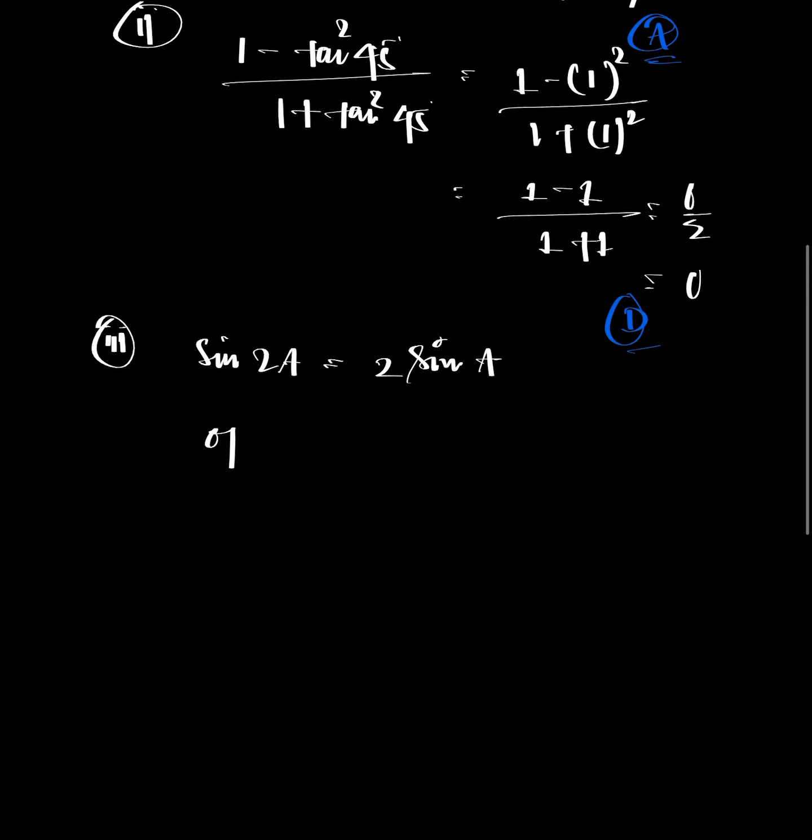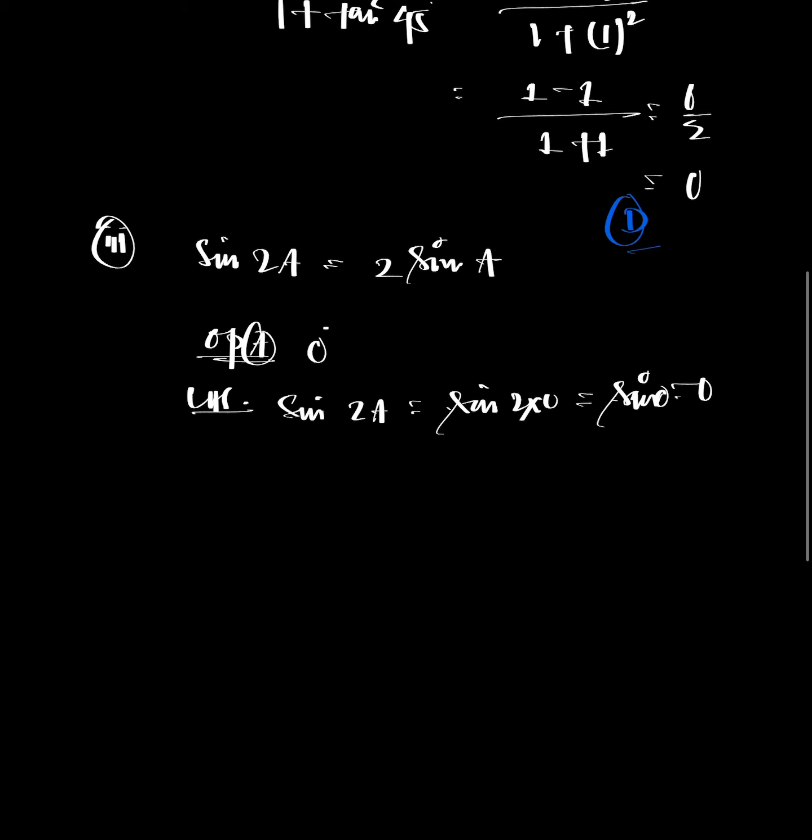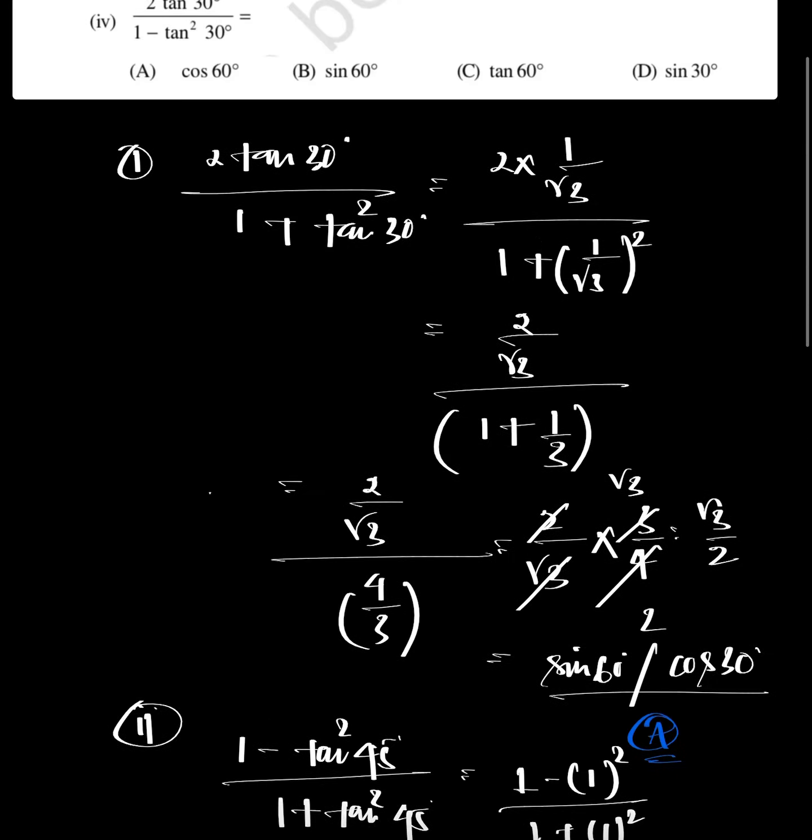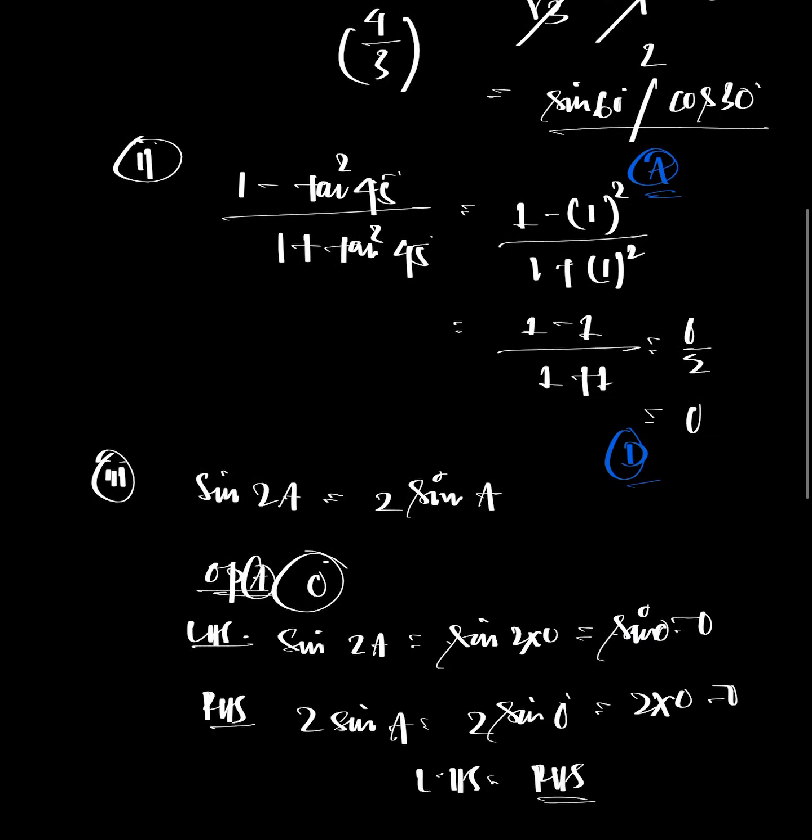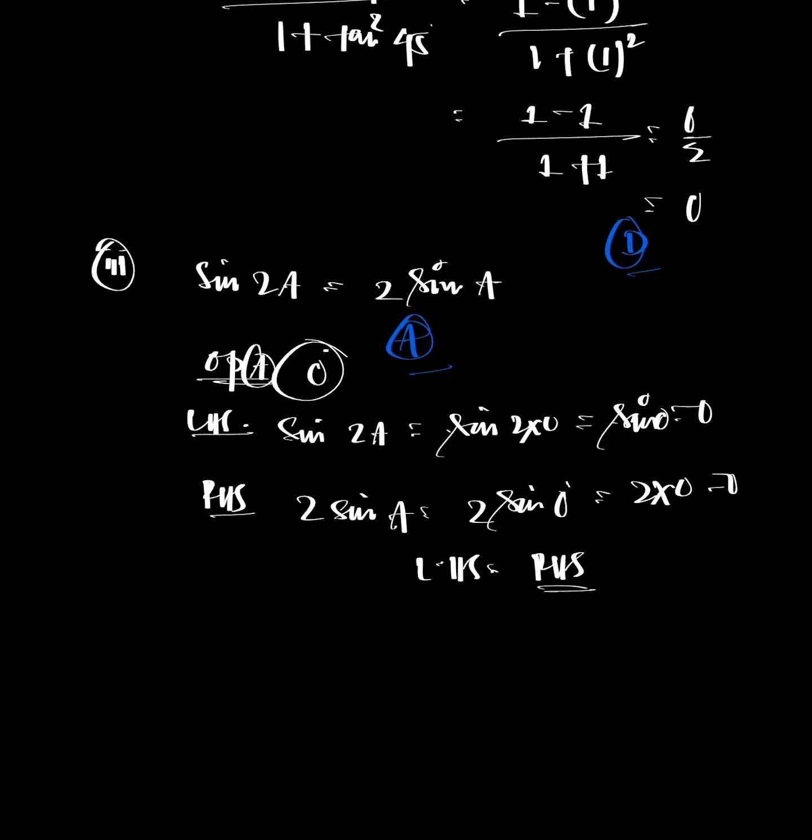Checking option A, A equals 0°. LHS: sin 2A equals sin 0 equals 0. RHS: 2 sin A equals 2 times sin 0 equals 0. Since LHS equals RHS, option A is correct. The answer is A, when A equals 0°.